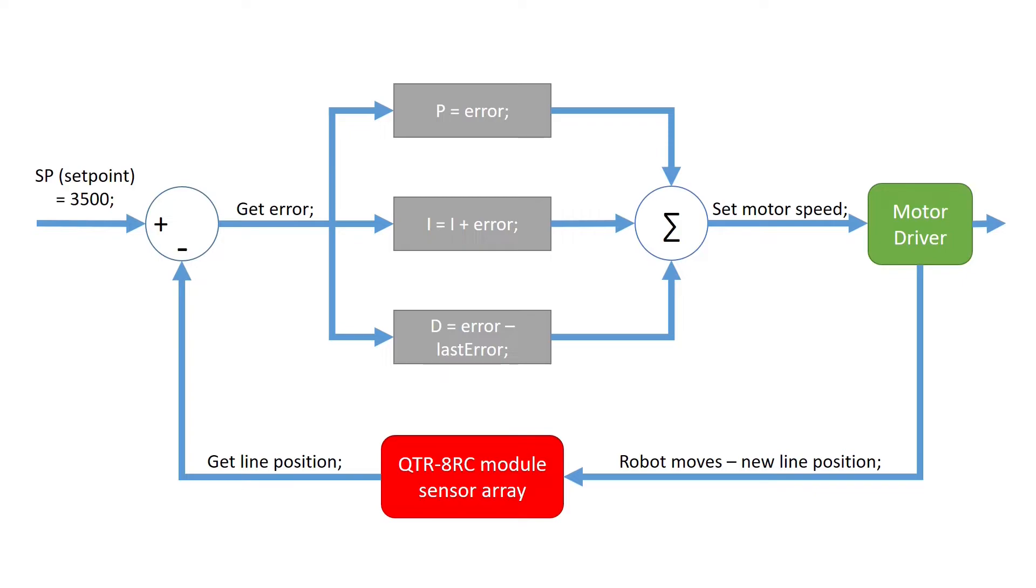Proportional, integral and derivative, therefore the abbreviation. Each one has a unique influence on the controller output. Implementing all three will result in an elegant and fast drive style, where the robot can take all the curves. Let's talk about each term and its role.